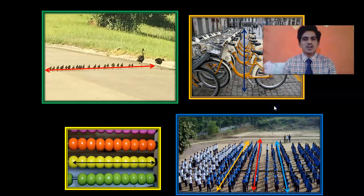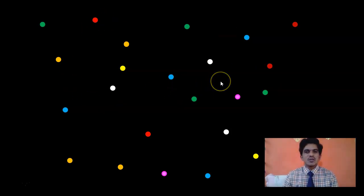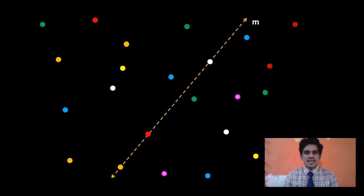Now let us bring this concept of straight line to a plane. On a plane, as we know, we can plot an infinite number of points. I am taking the points as circles here for the understanding of the concept. I have drawn here a straight line with name M. There are a few points on the straight line M — they are A, B, and C.